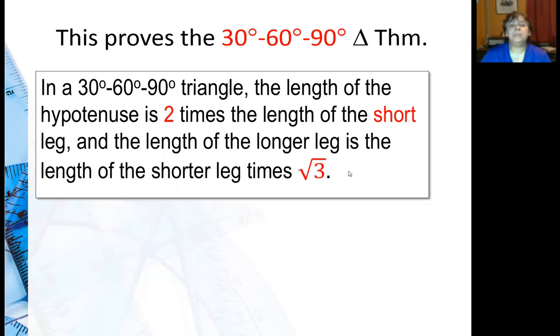So in the 30-60-90 triangle, the length of the hypotenuse is 2 times the length of the short leg, and the length of the longer leg is the length of the shorter leg times square root of 3.